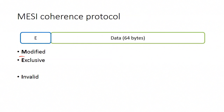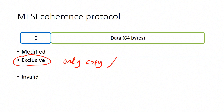The third state is the exclusive state, which indicates that as with the modified state this is the only copy of the data in the cache hierarchy, but in contrast with the modified state this copy is actually clean. So the data this cache line contains is the same as the data in main memory.